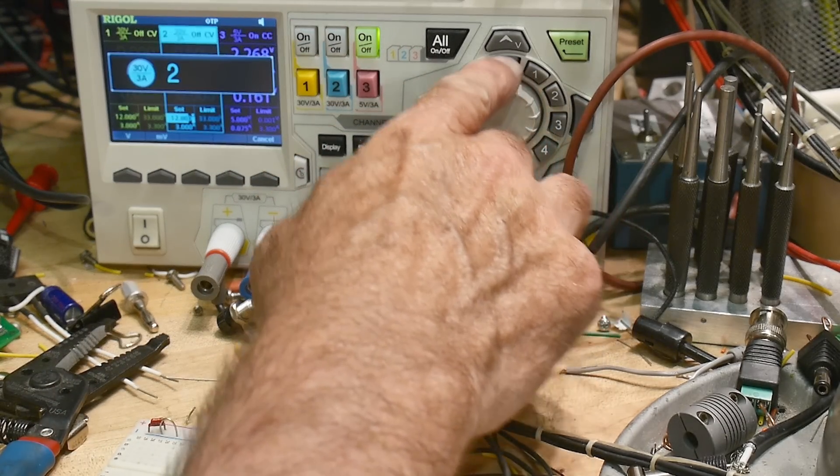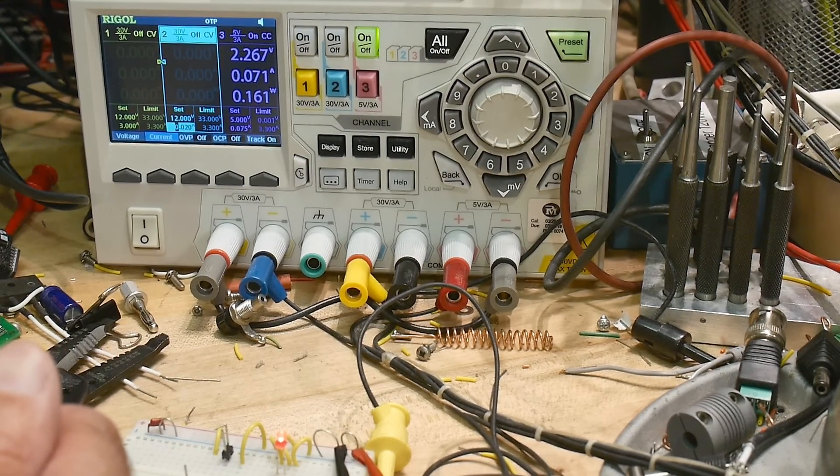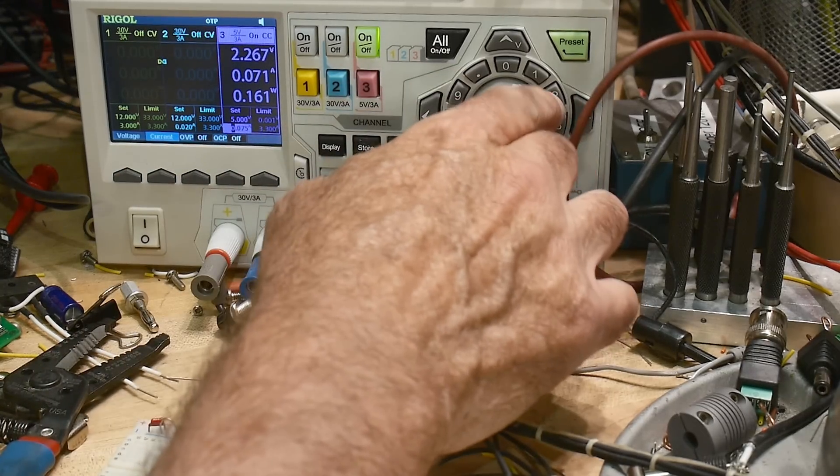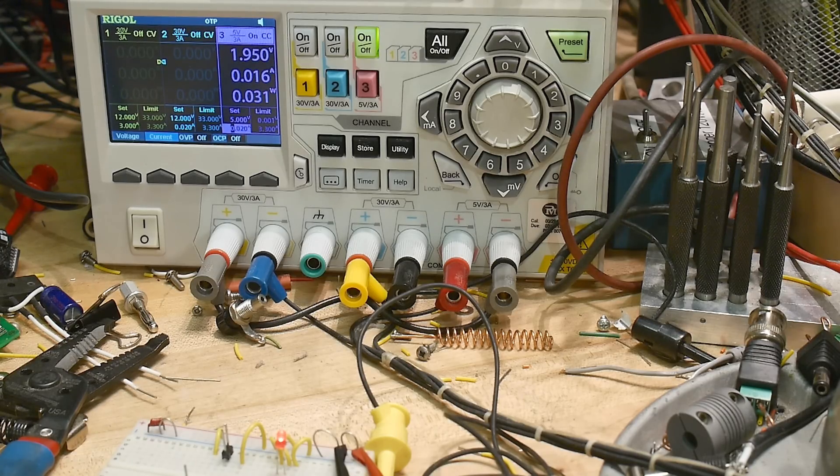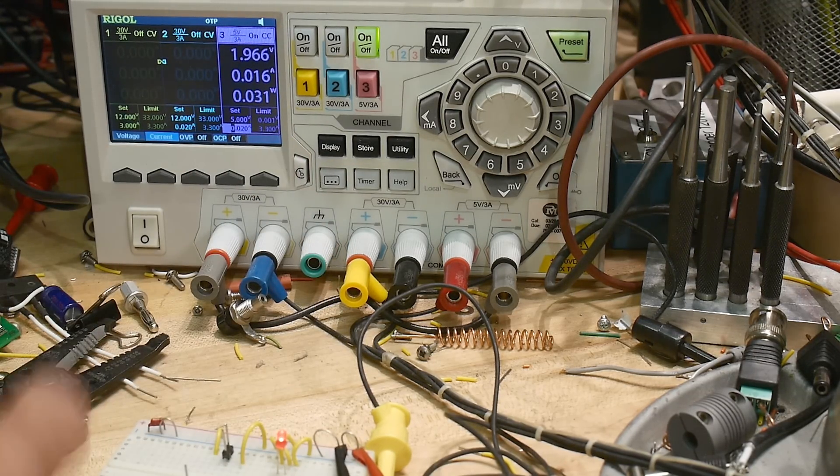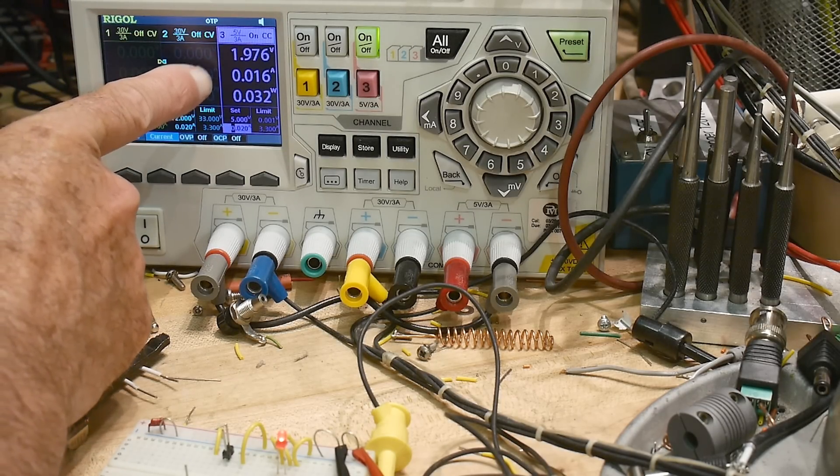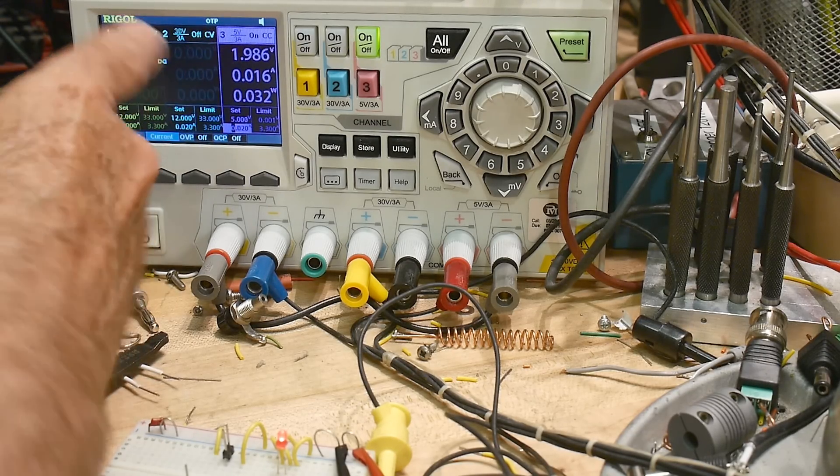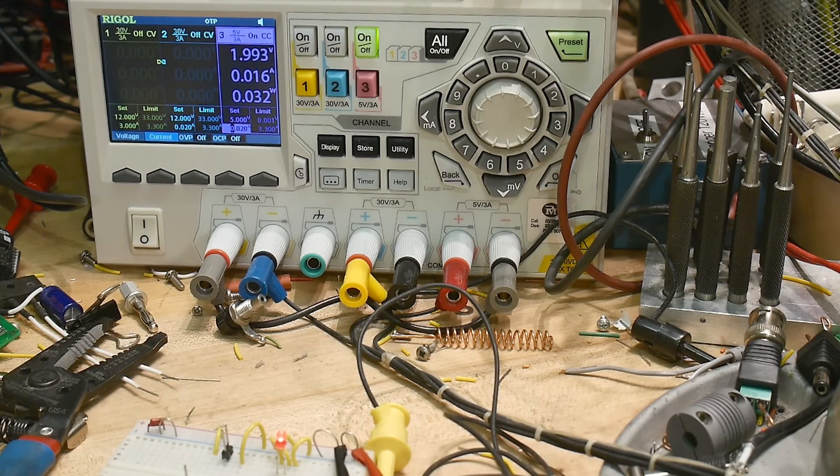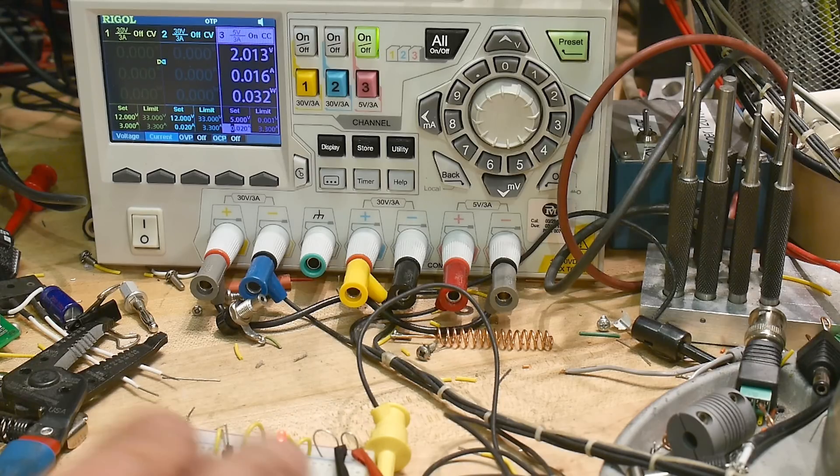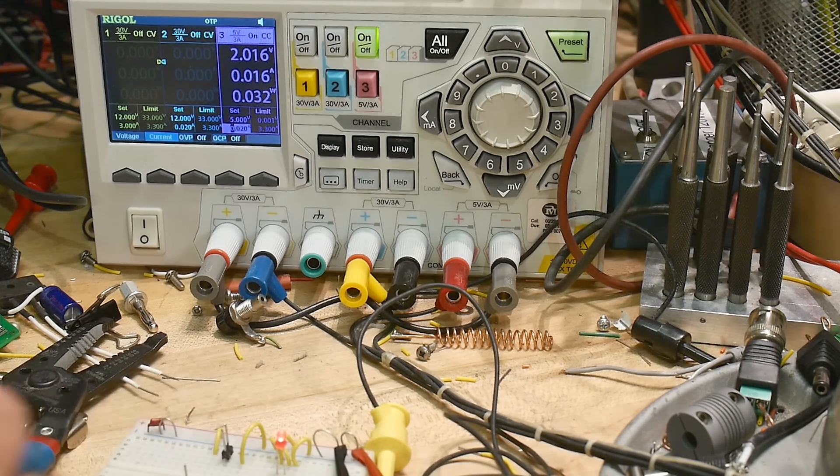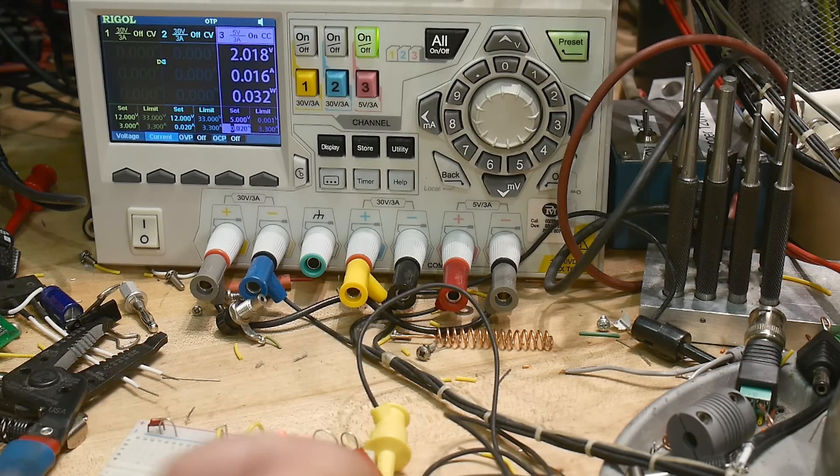Let's drive it at 20 milliamps. There we go, it still looks perfectly fine but the voltage changed. This is the forward voltage of the LED and this is the amount of amperage we're putting through, and this is the watts. So pay attention to the watts. This is 32 milliwatts.